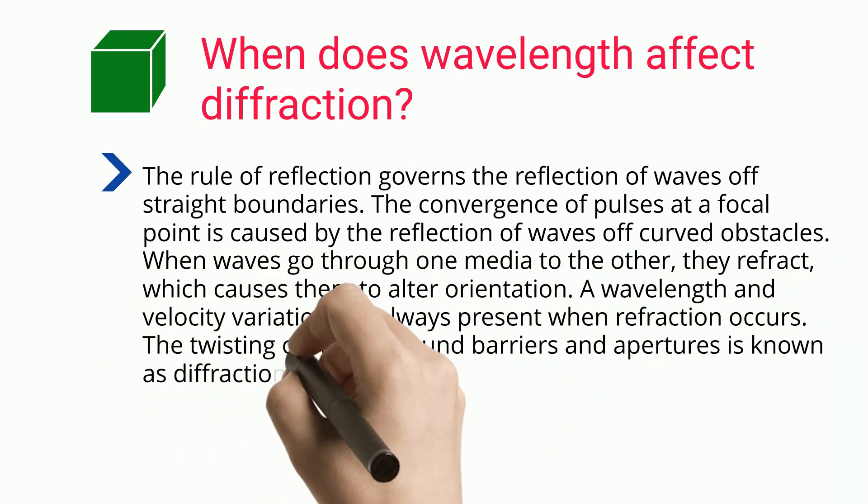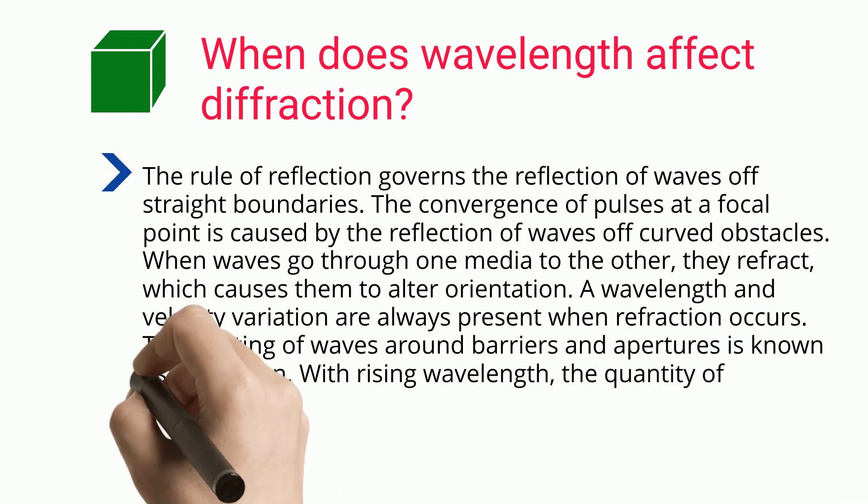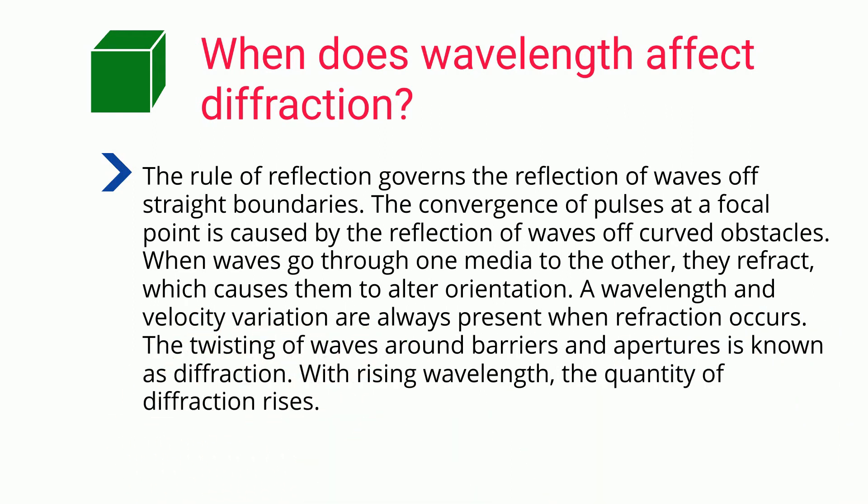A wavelength and velocity variation are always present when refraction occurs. The twisting of waves around barriers and apertures is known as diffraction. With rising wavelength, the quantity of diffraction rises.